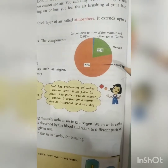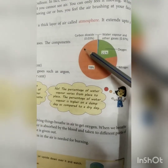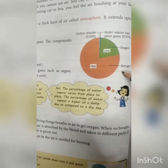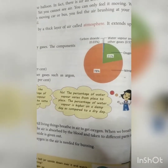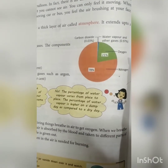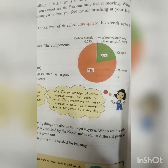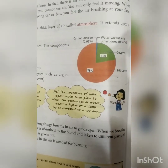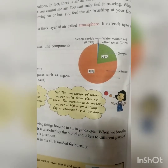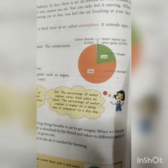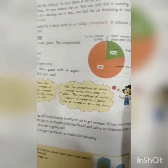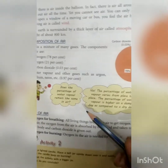A diagrammatic representation of the presence of all these gases is given in your book. The most abundantly present gas in the air is nitrogen, followed by oxygen at 21%. The level of carbon dioxide is 0.03%, and water vapors are also present in the air.